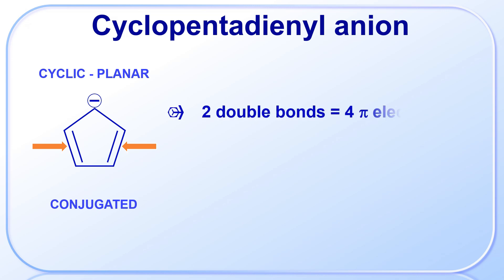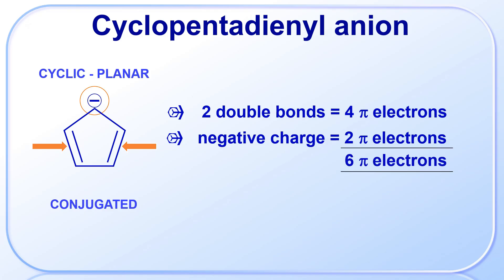This is another interesting example, cyclopentadienyl anion. It is also cyclic and planar, and there are two double bonds in conjugation with each other, as well as with the negative charge. So there are two double bonds equal to four pi-electrons, and also there is a negative charge that contributes two pi-electrons. Hence, the total of pi-electrons equals 6, and you know it is a Hückel number. Hence, cyclopentadienyl anion is aromatic in nature.